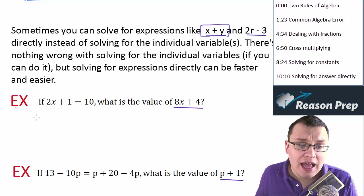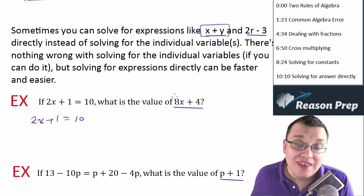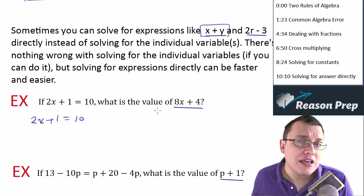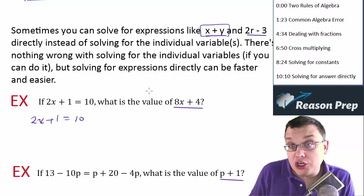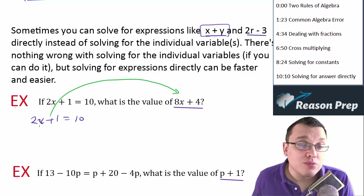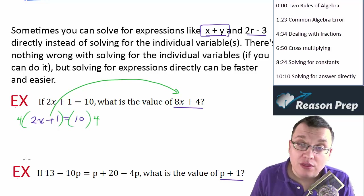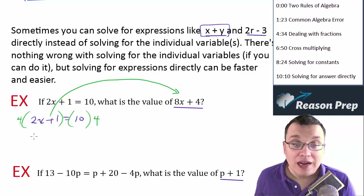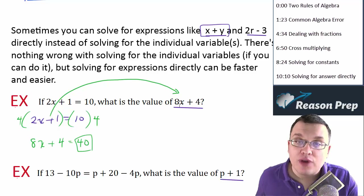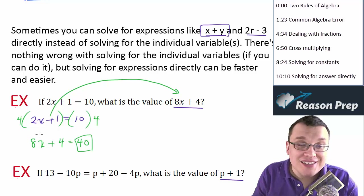Here's an example: 2x + 1 equals 10. You could subtract 1 from both sides, divide by 2, get x equals 9/2, then plug in to get 8 times 9/2 plus 4. It works, but it's a bit longer and error-prone. The easier way: notice that 2x + 1 multiplied by 4 gives 8x + 4. By rule 2, multiply the other side by 4 as well: 10 times 4 equals 40. So 8x + 4 equals 40. Done in one step — nice, quick, and very hard to make a mistake.